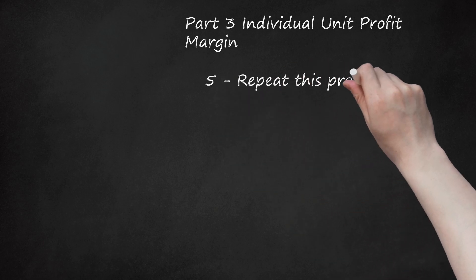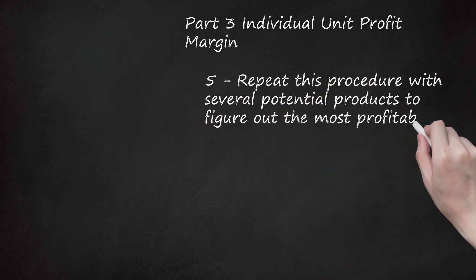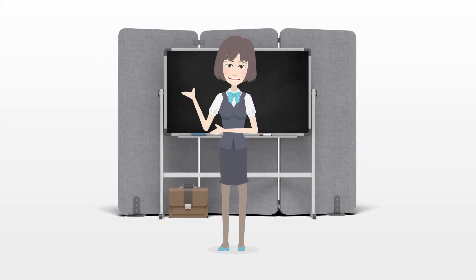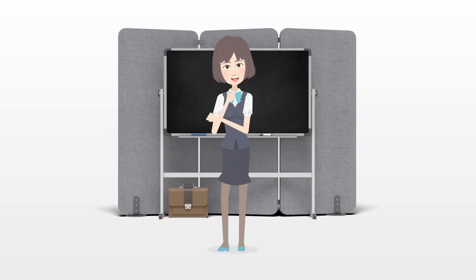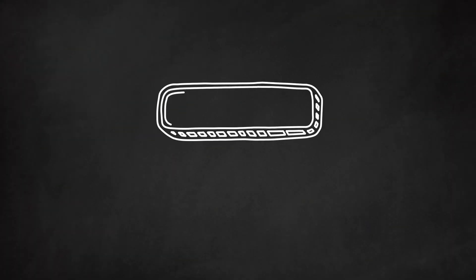Step 5: Repeat this procedure with several potential products to figure out the most profitable goods for your business. Things you'll need: Sales figures, Cost of goods sold, Calculator, Selling prices, Board.